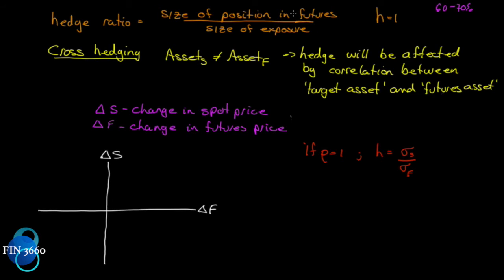So by only hedging 60 to 70 percent of their price risk, they still have 30 to 40 percent price risk exposure, but it's a fair trade-off because of the risk of hedging 100 percent and not being able to deliver on an uncertain growing season. So there's another element of risk.